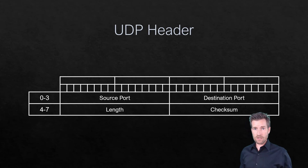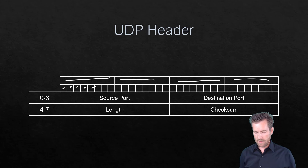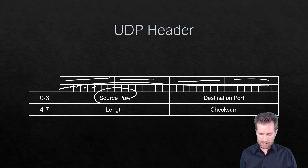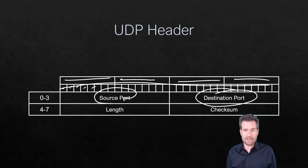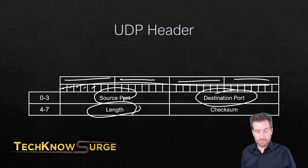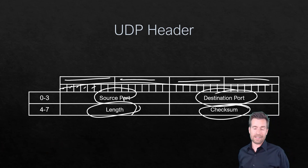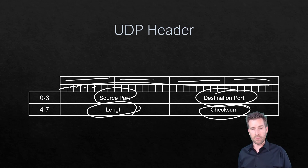UDP headers are pretty basic — there's not a whole lot to them. Each unit here is a bit, and eight of those make a byte, giving us 32 bits across. We still need a source and destination port, which operate just the same as they would in a TCP header. We also have the length field — the total length of the segment — and then we have the checksum, which ensures that when data gets to the other side, it is accurate and nothing has been altered along the way.